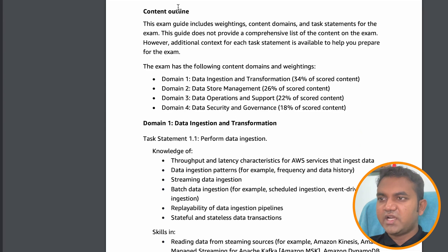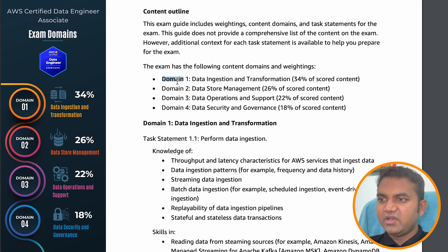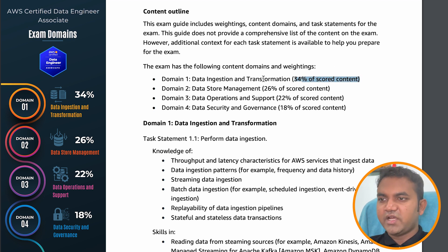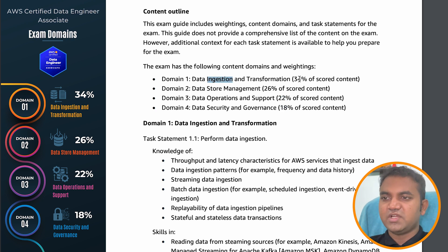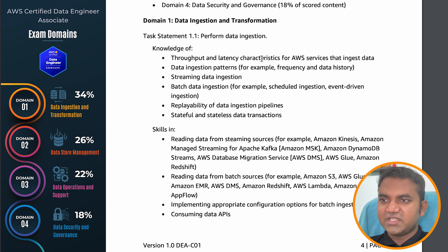There is a content outline talking about the domains and the weightage of the exam. Weightage tells you how many questions to expect from each domain: Data Ingestion and Transformation is 34%, Storage is 26%, Operations and Support is 22%, and Security and Governance is 18%. Links to this PDF will be available in the description.